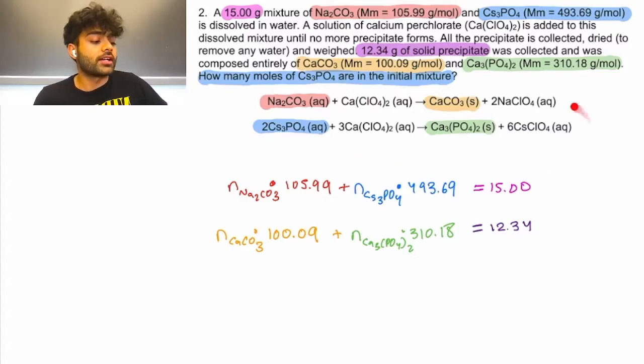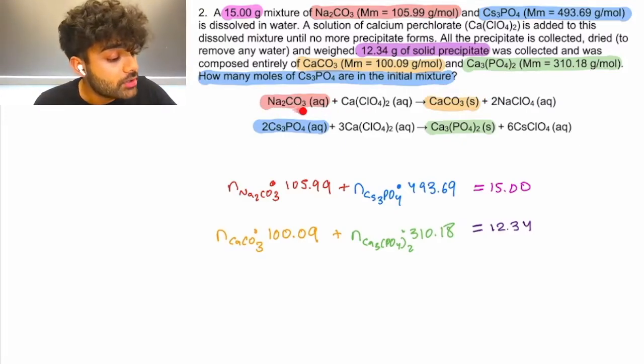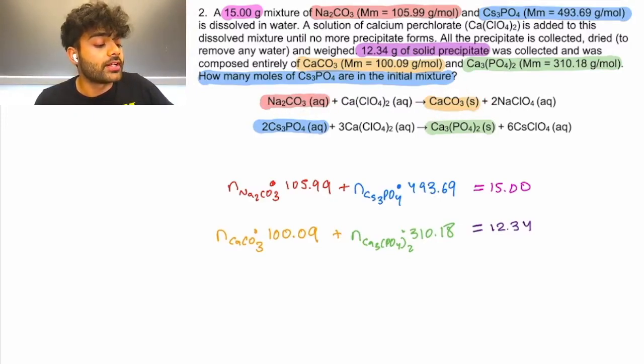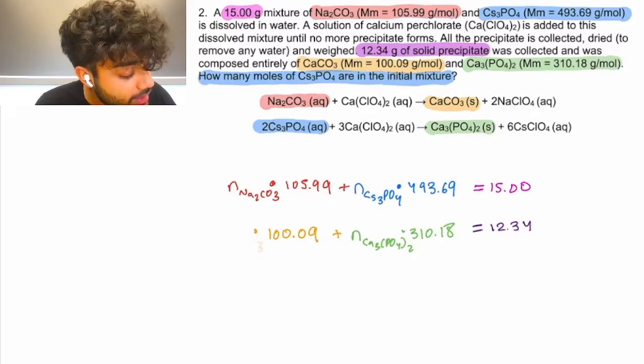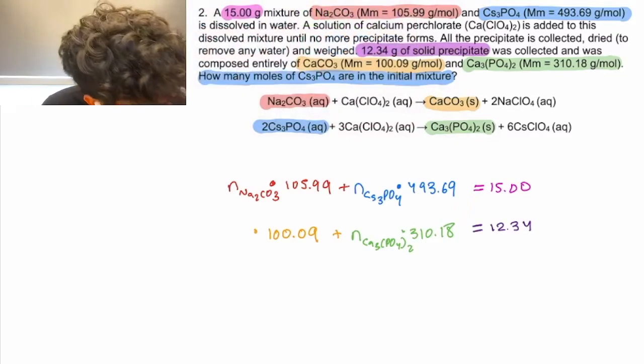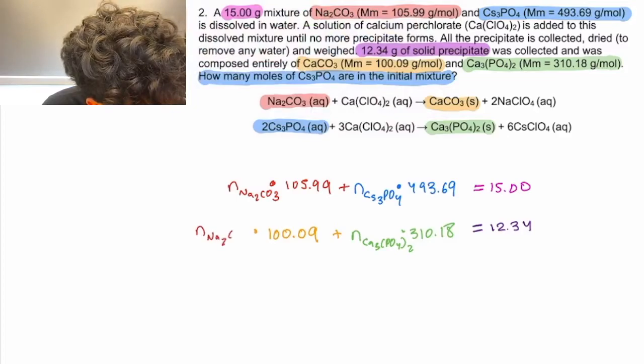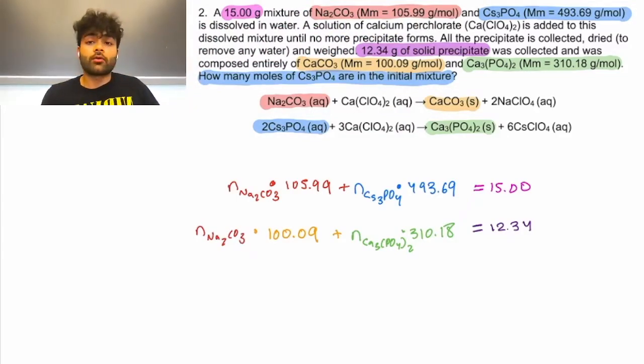Now, this is where these reactions we are given can help us. Because we know that CaCO3 comes from the reaction of Na2CO3, and we know that they are in a molar ratio of 1 to 1. We know that all of our moles of CaCO3 come from our moles of Na2CO3. So, we can actually rewrite our moles of CaCO3 as equaling our moles of Na2CO3 because of that 1 to 1 molar ratio.